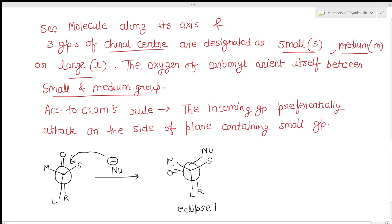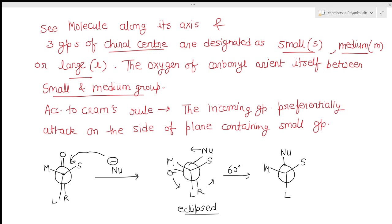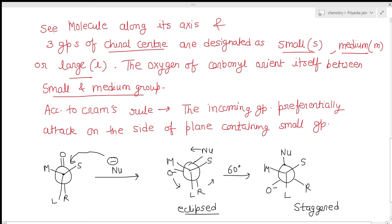In the Newman projection, after the nucleophile attacks from the small group side in the eclipsed conformation, you rotate by 60° to get the staggered form. The nucleophile (R group) ends up on one side and the O⁻ (which converts to OH) on the other. This staggered conformation represents the major product.